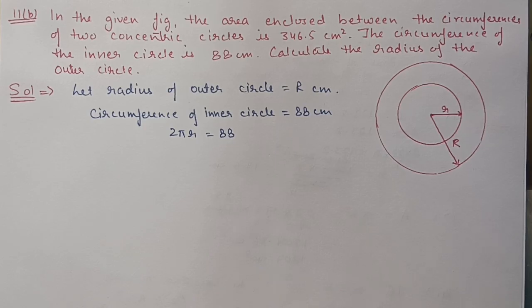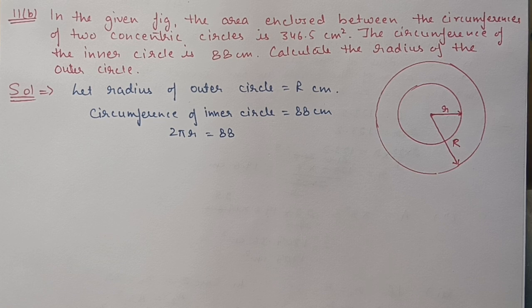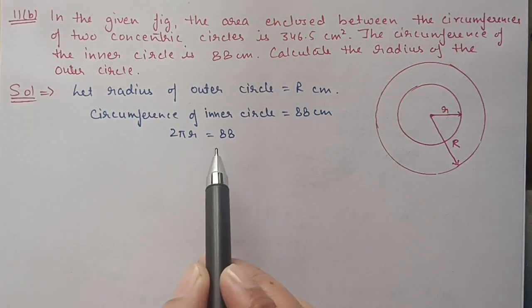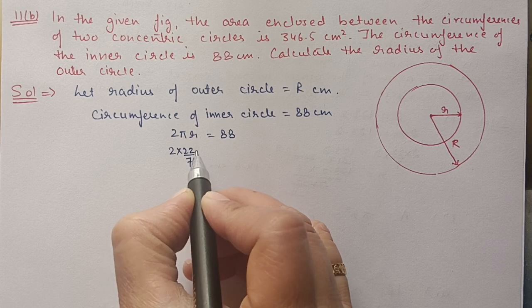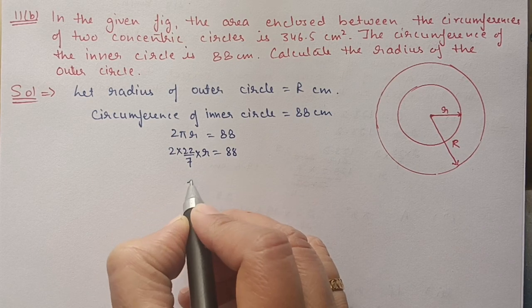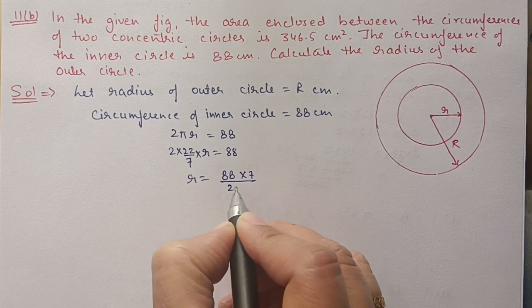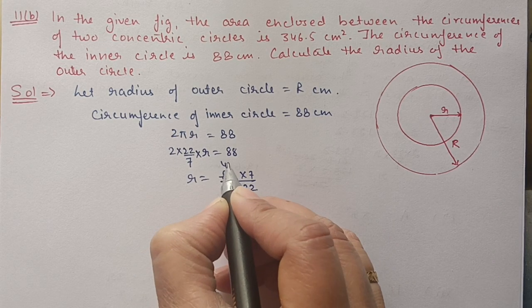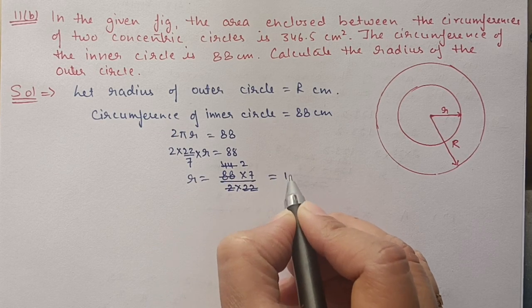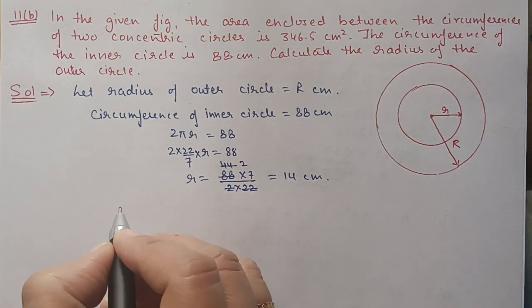Next we have Question 11 part (b). The area enclosed between the circumferences of two concentric circles is 346.5 centimeters squared. The circumference of the inner circle is 88 centimeters. Calculate the radius of the outer circle. Let the outer circle radius be R and inner circle radius be r. From 2πr = 88: 2 × (22/7) × r = 88, so r = 88 × 7 / 44 = 14 centimeters.